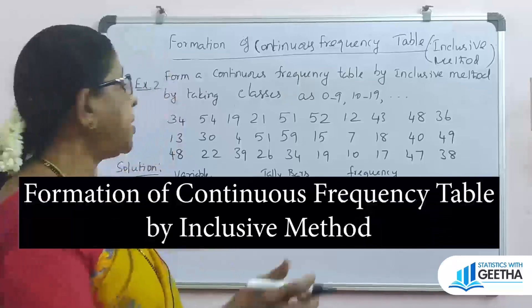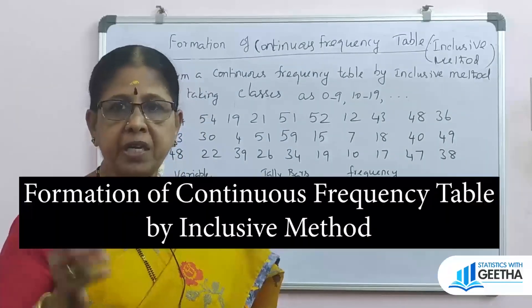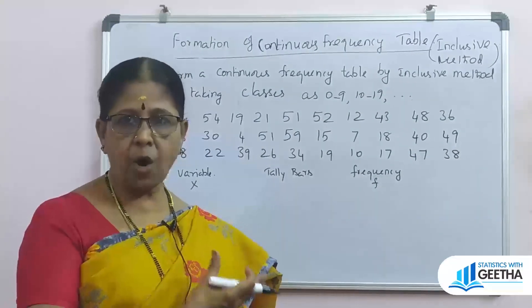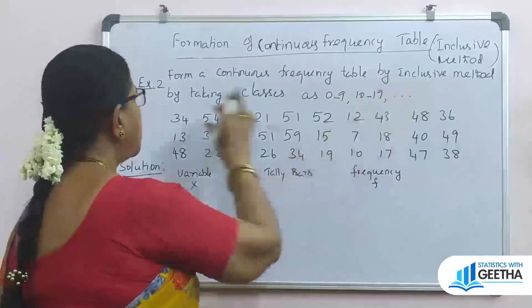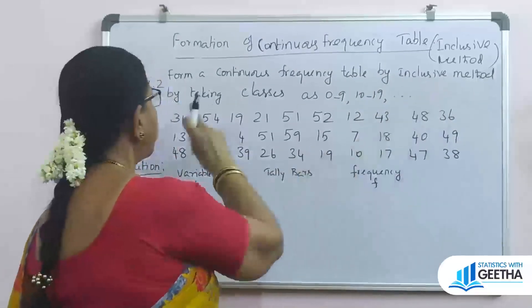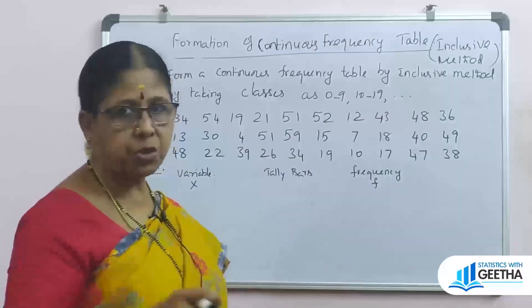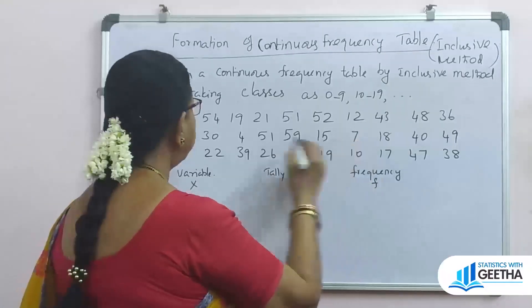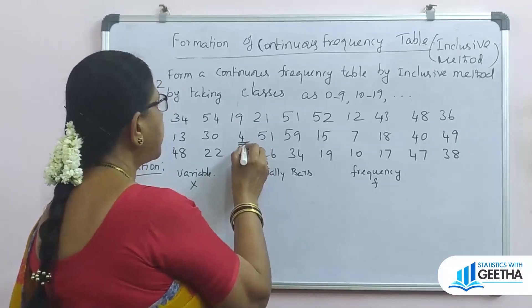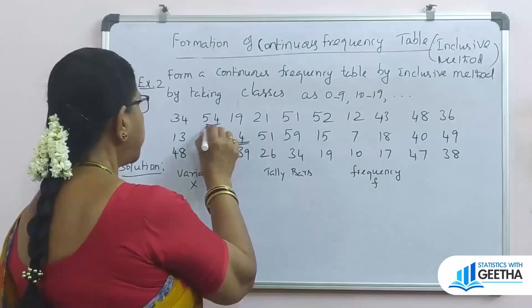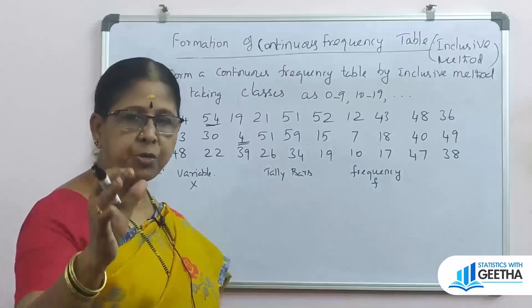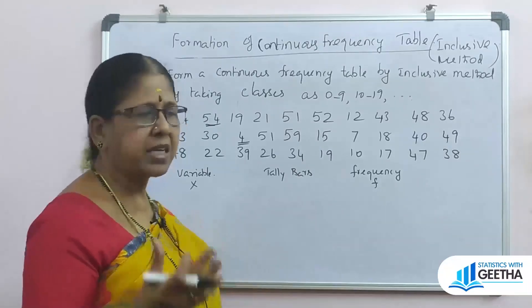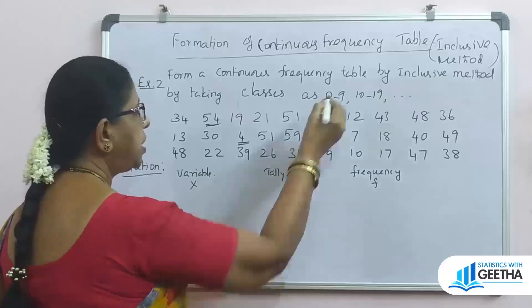Now we are going to look at the formation of continuous frequency distribution by the inclusive method. In a previous video we covered what the inclusive method is. Now we will look at a problem using the inclusive method. Depending upon the lowest and highest variable values, class intervals are mostly multiples of 5 or 10.